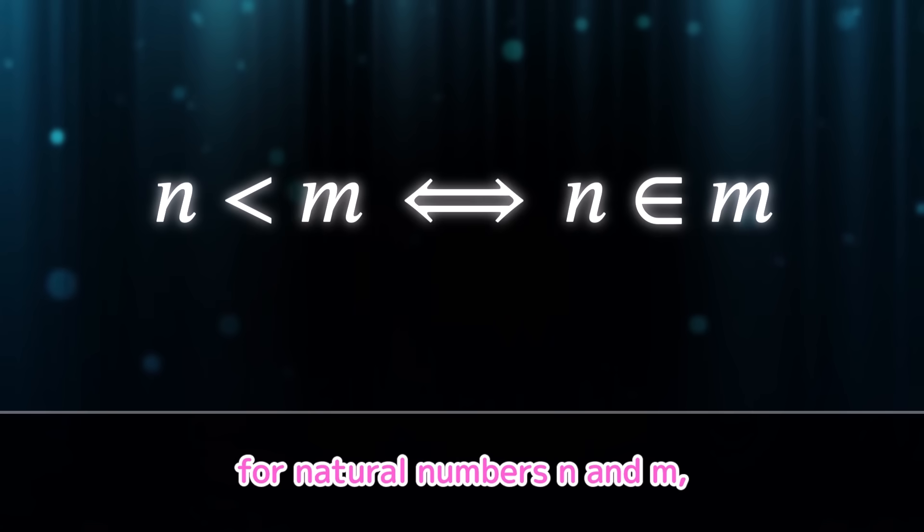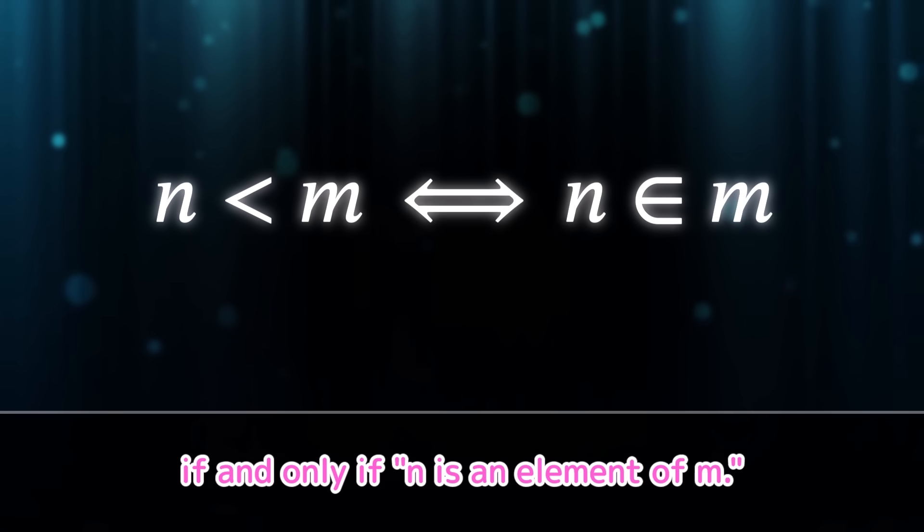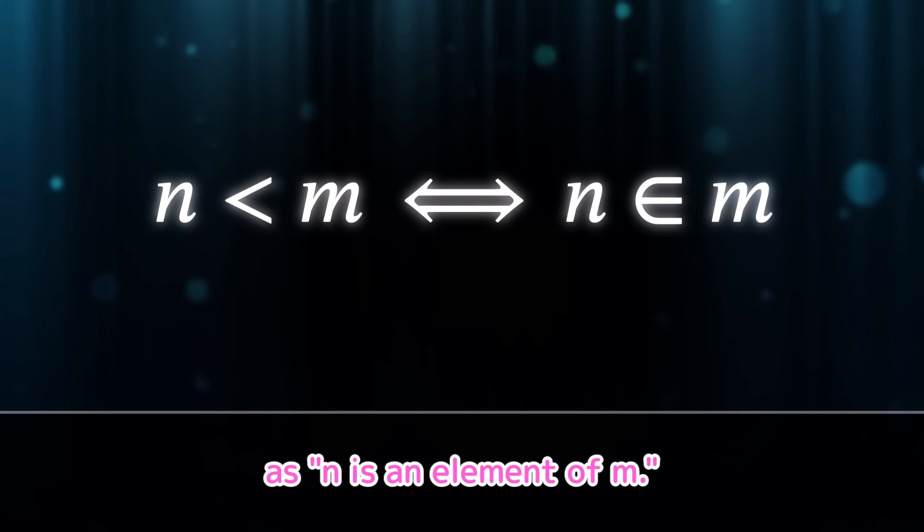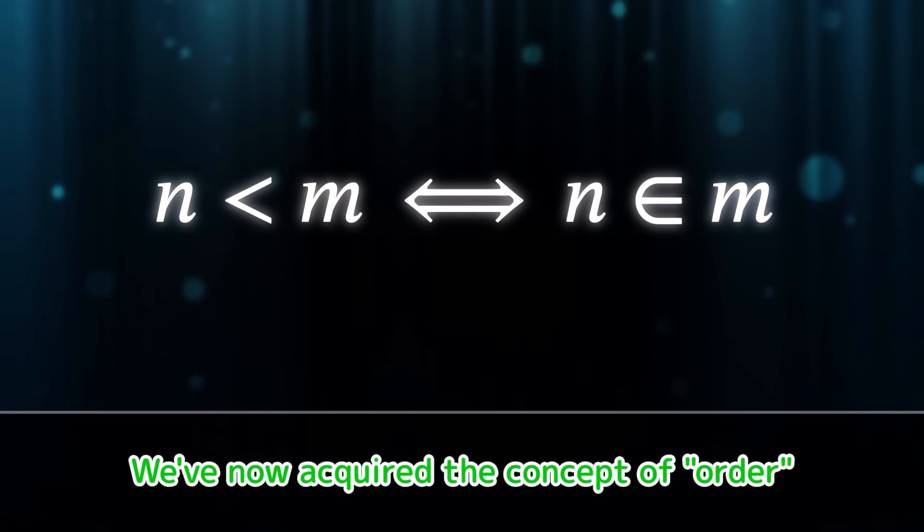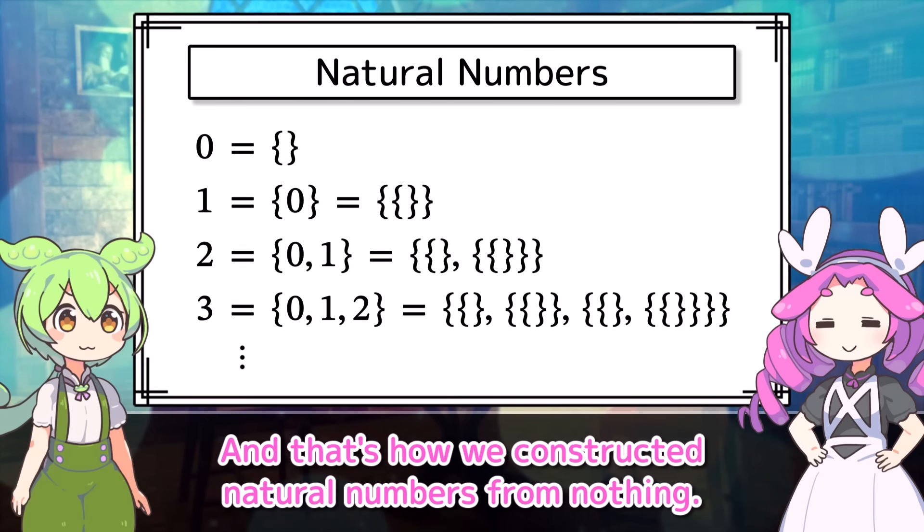More generally, for natural numbers n and m, we say that n is less than m if and only if n is an element of m. So we can define n is less than m as n is an element of m. We've now acquired the concept of order for natural numbers. And that's how we constructed natural numbers from nothing.